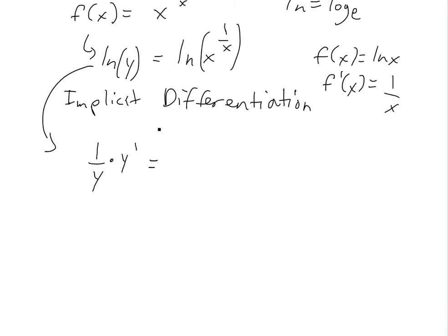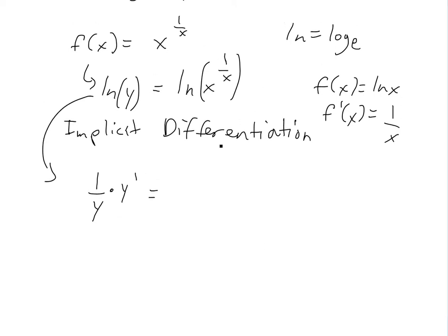You implicitly differentiate the right side. This is called implicit because you don't solve it directly — there's a y there. This term equals one over x times ln x. So we take the ln to get rid of the weird exponent. Taking the derivative of one over x times ln x uses the product rule: the derivative of one over x is negative one over x squared times ln x...